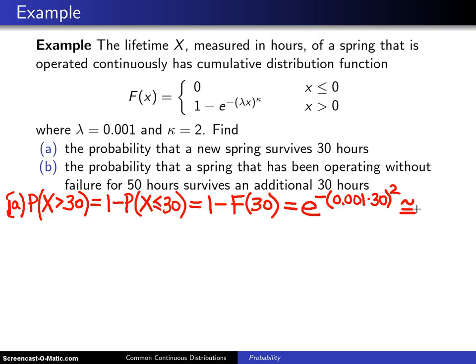And when you calculate that on a hand calculator or an app, you get approximately 0.9991. And in reliability and survival analysis, especially for manufactured products such as springs, we're used to a lot of nines being out front here.